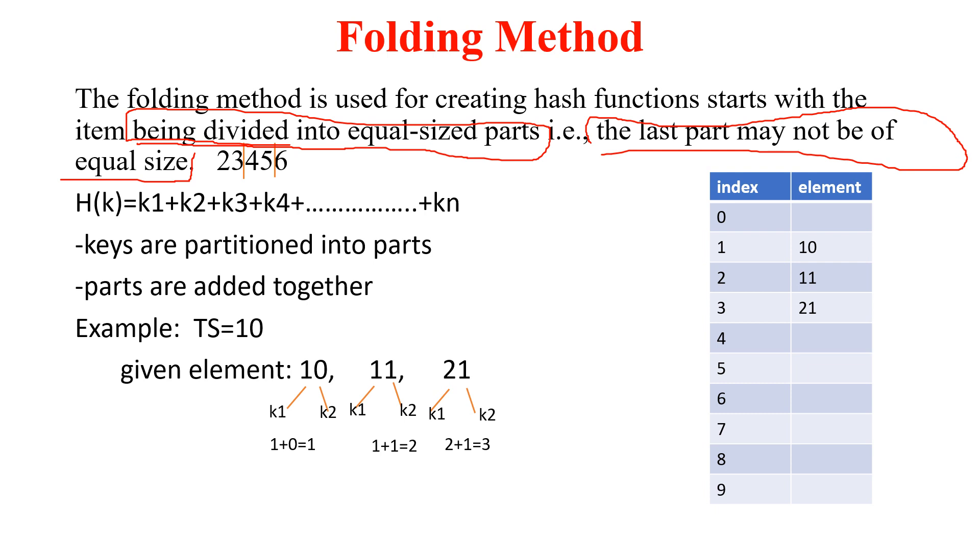Here we have one formula: H(K) equals K1 plus K2 plus K3 plus K4 to KN. K1, K2, K3 is nothing but the partitioned parts of the key. The parts are added together and that will be the index where you can store the key.